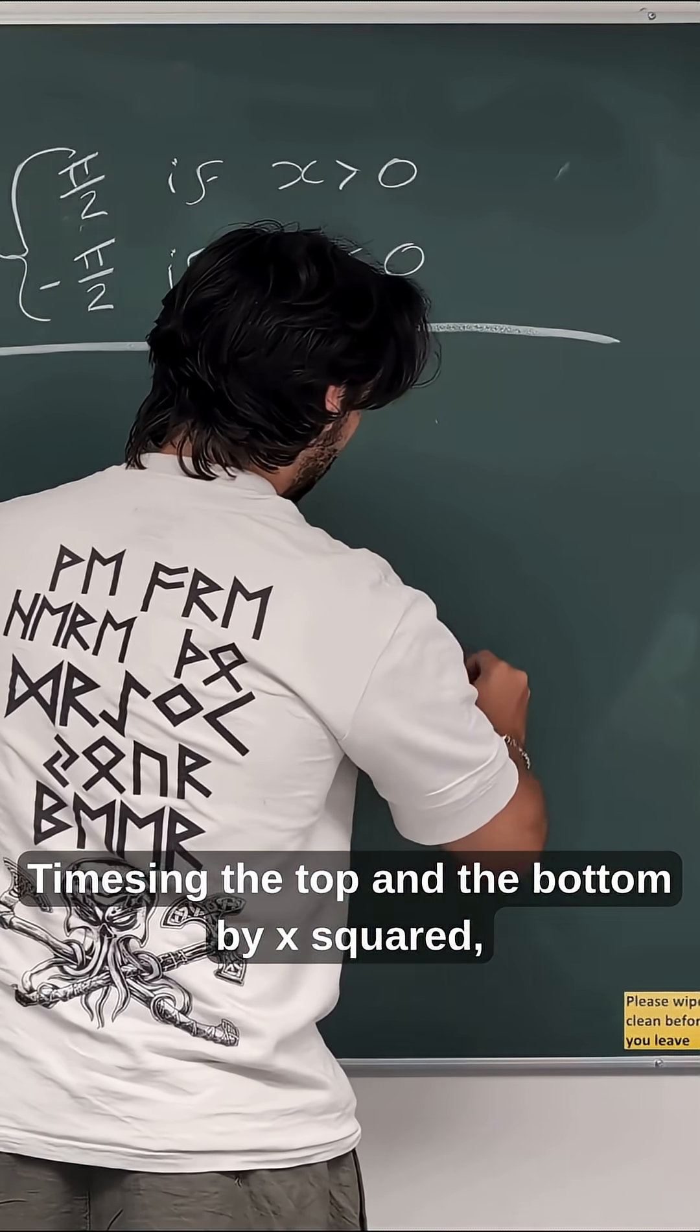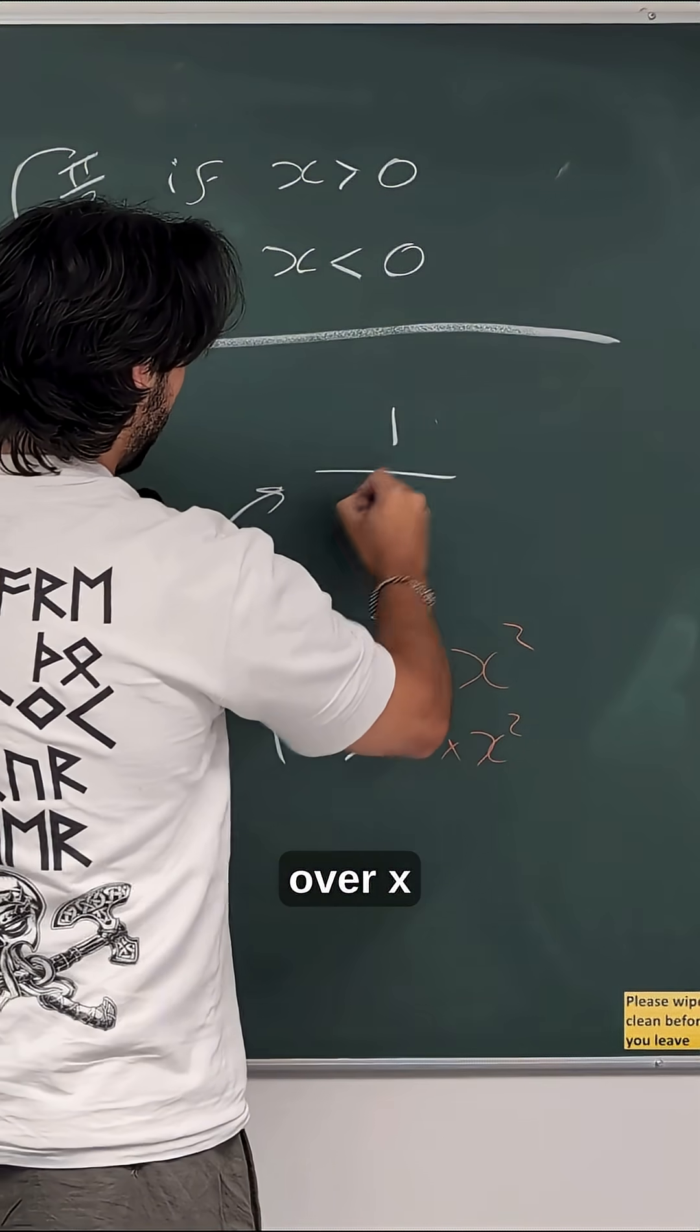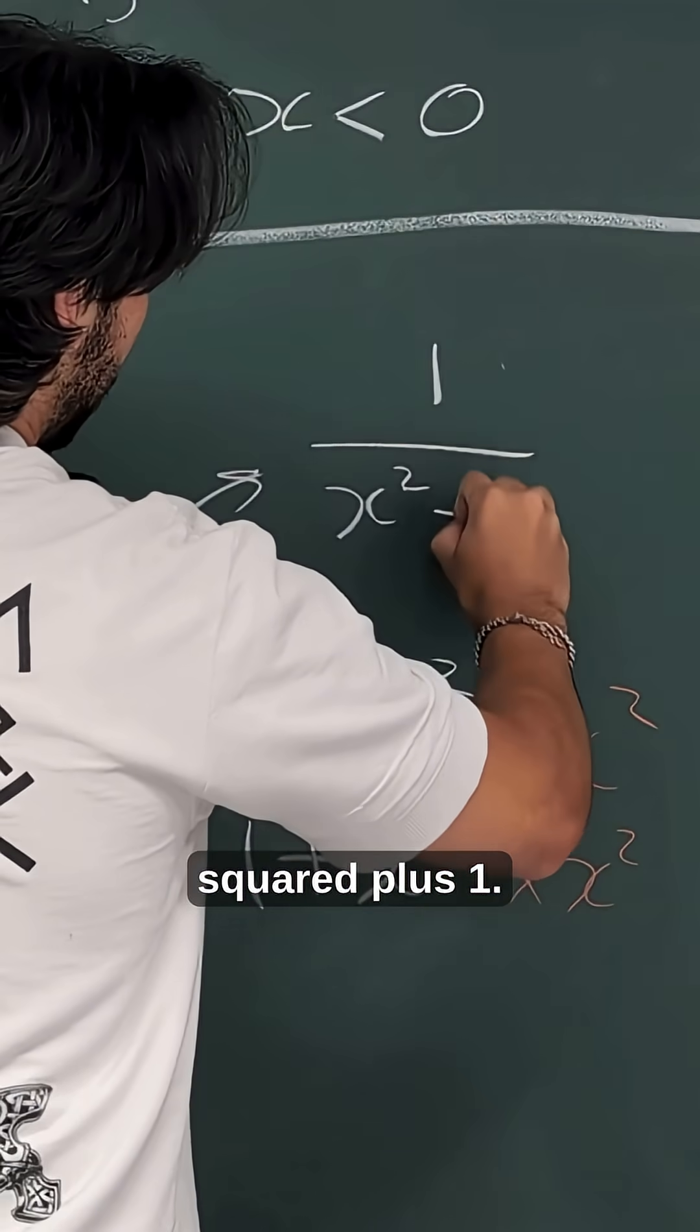Timesing the top and the bottom by x squared, times x squared, the whole thing here becomes 1 over x squared plus 1.